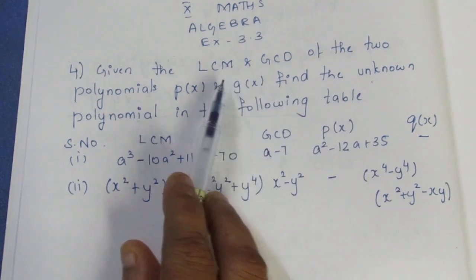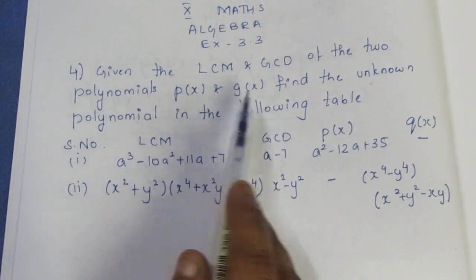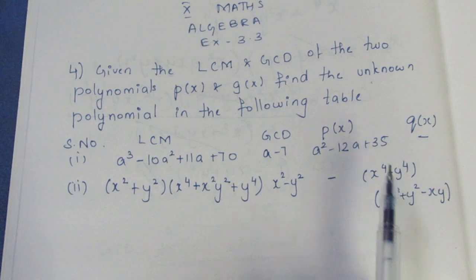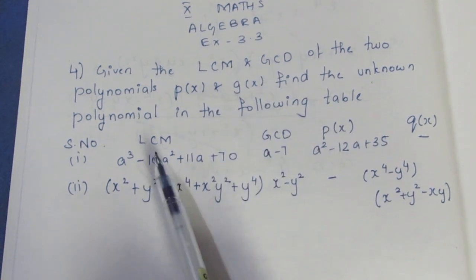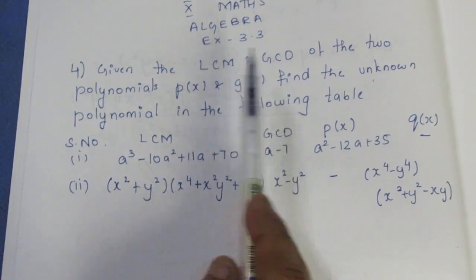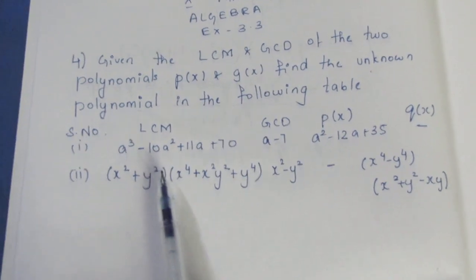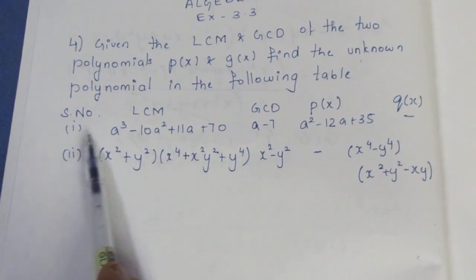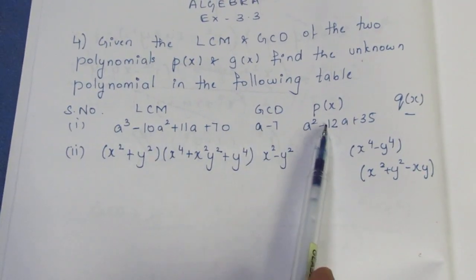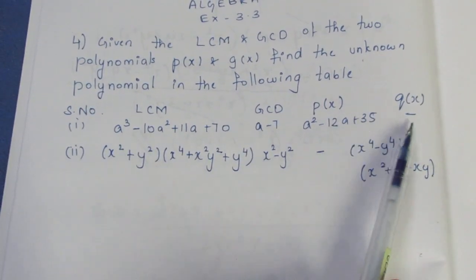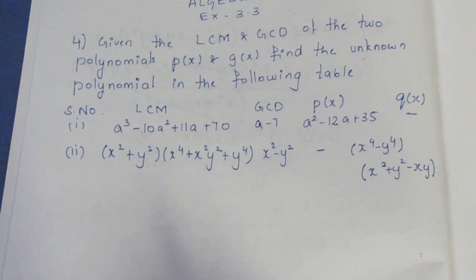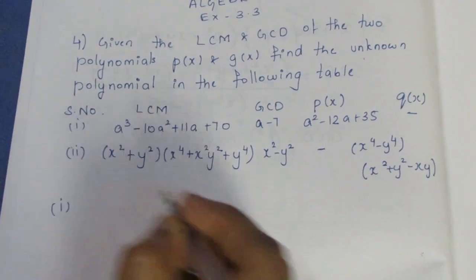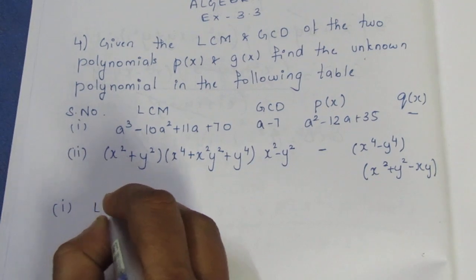So in the table we have LCM, GCD, P of X, and Q of X. There are two subdivisions. First subdivision has LCM, GCD, P of X, and Q of X columns.